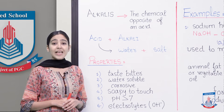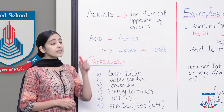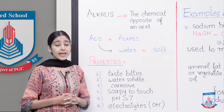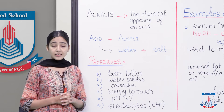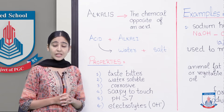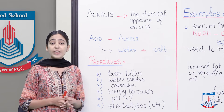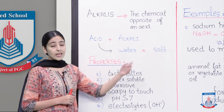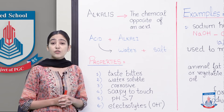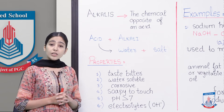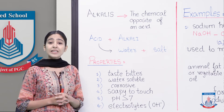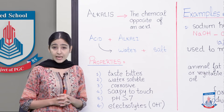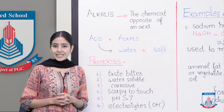Alkalis are the chemical opposites of acids. That means if we add an alkali solution to an acidic solution, they will cancel out the effect of each other and they will make water and salt. This process is called neutralization, because if we test the pH of a solution containing both an alkali and acid, the pH will be 7.